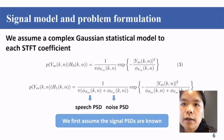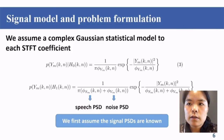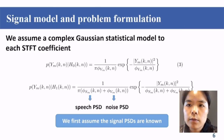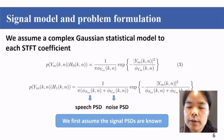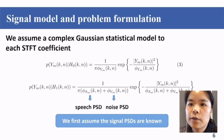We further assume a complex Gaussian statistical model for each STFT coefficient of the noisy signal. The first state corresponds to equation three, where there is only noise. The second is the probability density function when speech is present. Here, PhiV is the noise power spectral density and PhiS is the speech PSD. We first assume that the signal PSDs are known, and in the following slides I will show how to estimate them.